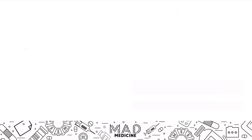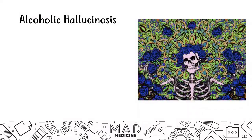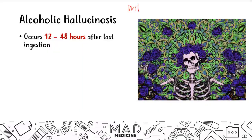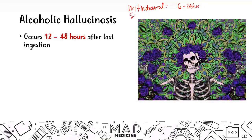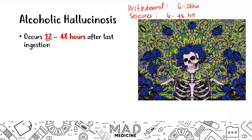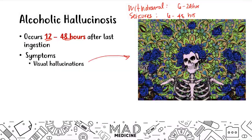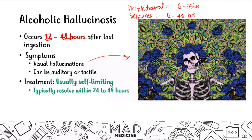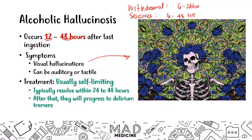Alcoholic hallucinosis occurs around 12 to 48 hours after the last ingestion. Symptoms are usually visual hallucinations, but can also be auditory and tactile. This is usually self-limiting, resolving within a day or two on its own. However, if the hallucinations do not resolve, they can progress to delirium tremens.